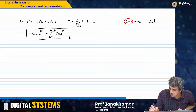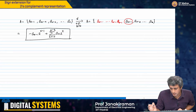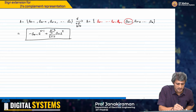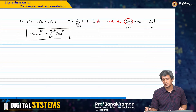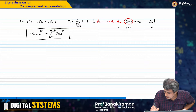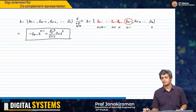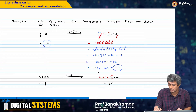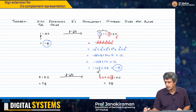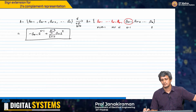What is the sign bit? This one — A_(n-1). I will now extend this same value: A_(n-1), A_(n-1), all the way to A_0. Just to get the indices right: this is bit 0, this is bit n minus 1 — so n bits there. Then this is bit n, n plus 1, all the way to n plus m minus 1. I have added m more bits, exactly like we have done before — by taking the sign bit and copying it m times.